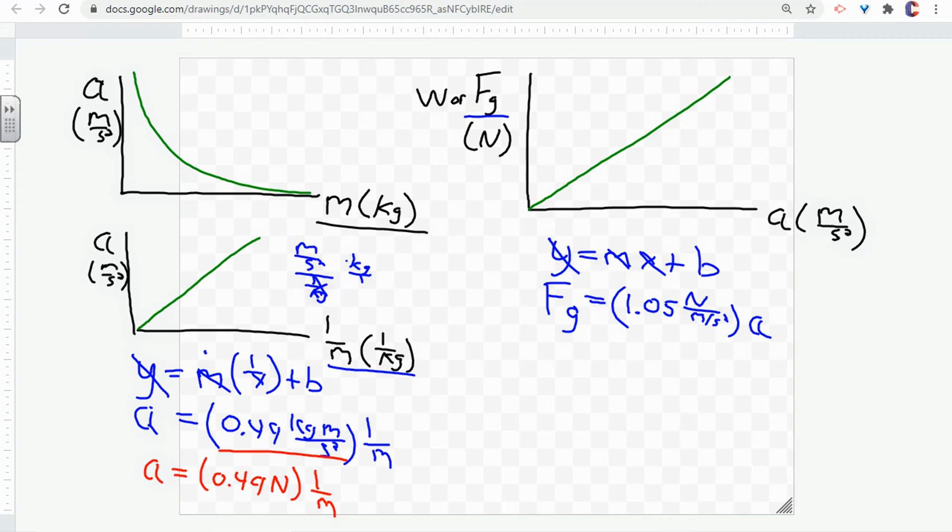So this slope simplifies all the way down to Newtons. And what was our controlled value that was measured in Newtons for this experiment? Well, that was the weight of the hanger. And the weight of the hanger, we know, was 0.49 Newtons.